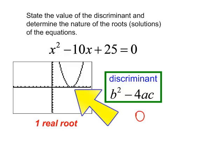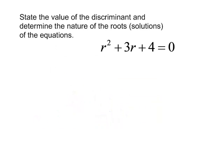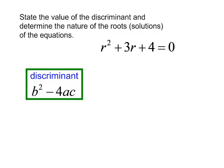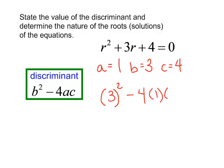One more problem. We want to know the value of the discriminant of r squared plus 3r plus 4 equals zero. Everything is on one side. My a is equal to 1, b is equal to 3, and c is equal to 4.